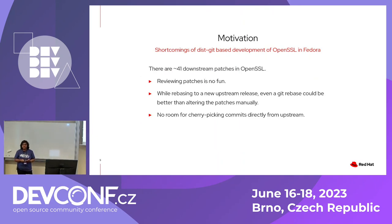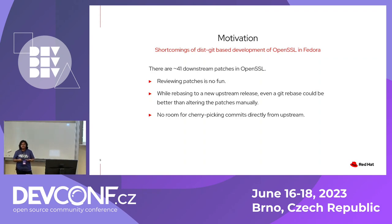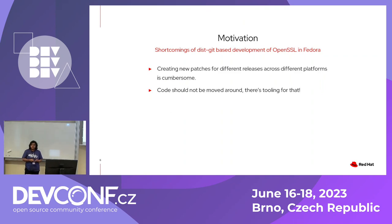If we talk about OpenSSL in general, we have about 49 patches that we maintain downstream. Every time we do a new rebase to a newer upstream release, we felt that a git rebase could have done a better job than manually changing multiple patches. Reviewing patches is also not fun, especially when you need the entire source code open for context. Most of our fixes in Fedora or RHEL are direct cherry picks from upstream, but distgit has no room for cherry picking. In general, creating multiple patches for different releases across different distributions can become very cumbersome.